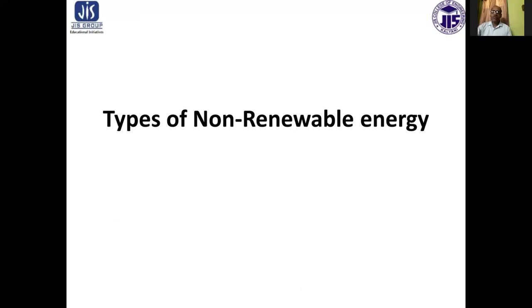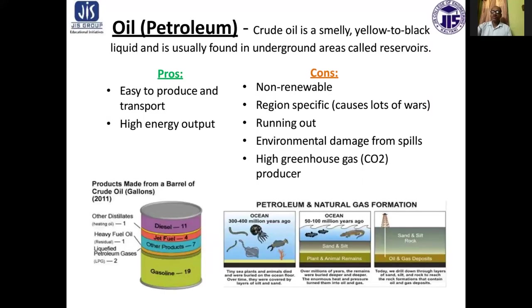The first type of non-renewable energy is oil. Oil is a murky yellow to black liquid usually found in underground areas called reservoirs. The advantages are that it is easy to produce and transport and has high energy output. The disadvantages are that it is non-renewable, region-specific, fast running out, causes environmental damage from spills, and is a high greenhouse gas producer.